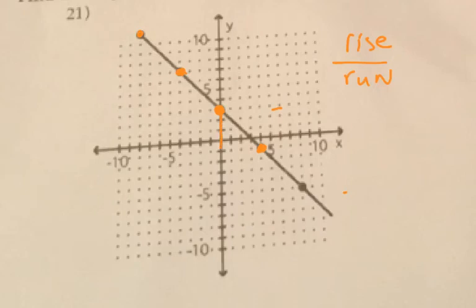1, 2, 3, 4. And we go to the right, how much? 1, 2, 3, 4. So because we're dropping 4, it's negative 4. And then we go to the right 4. So it's negative 4 over 4, which is equal to negative 1.